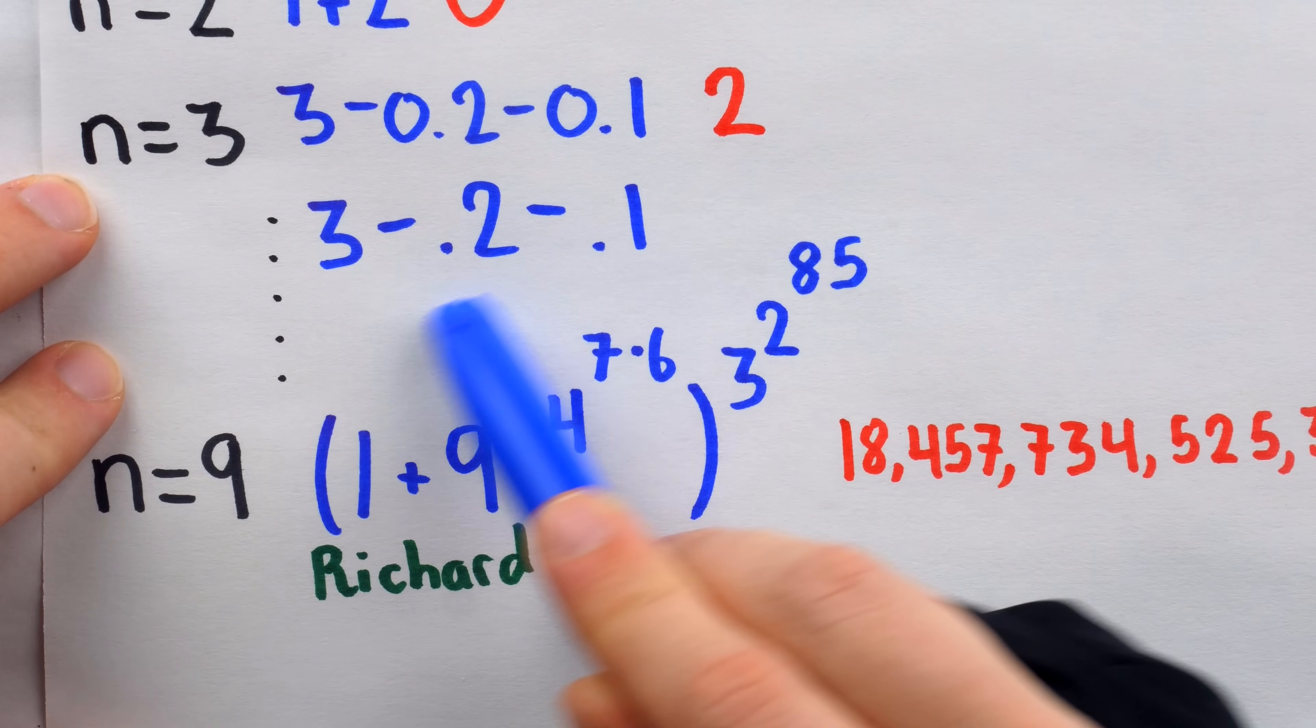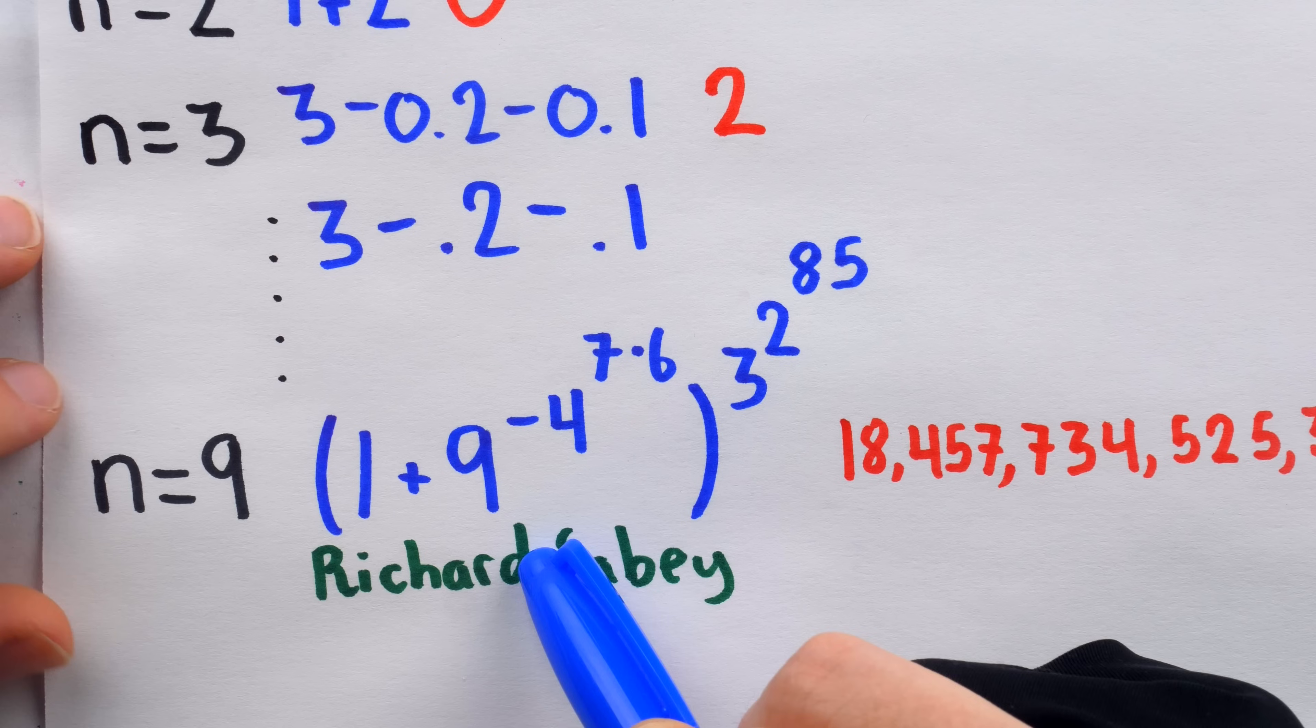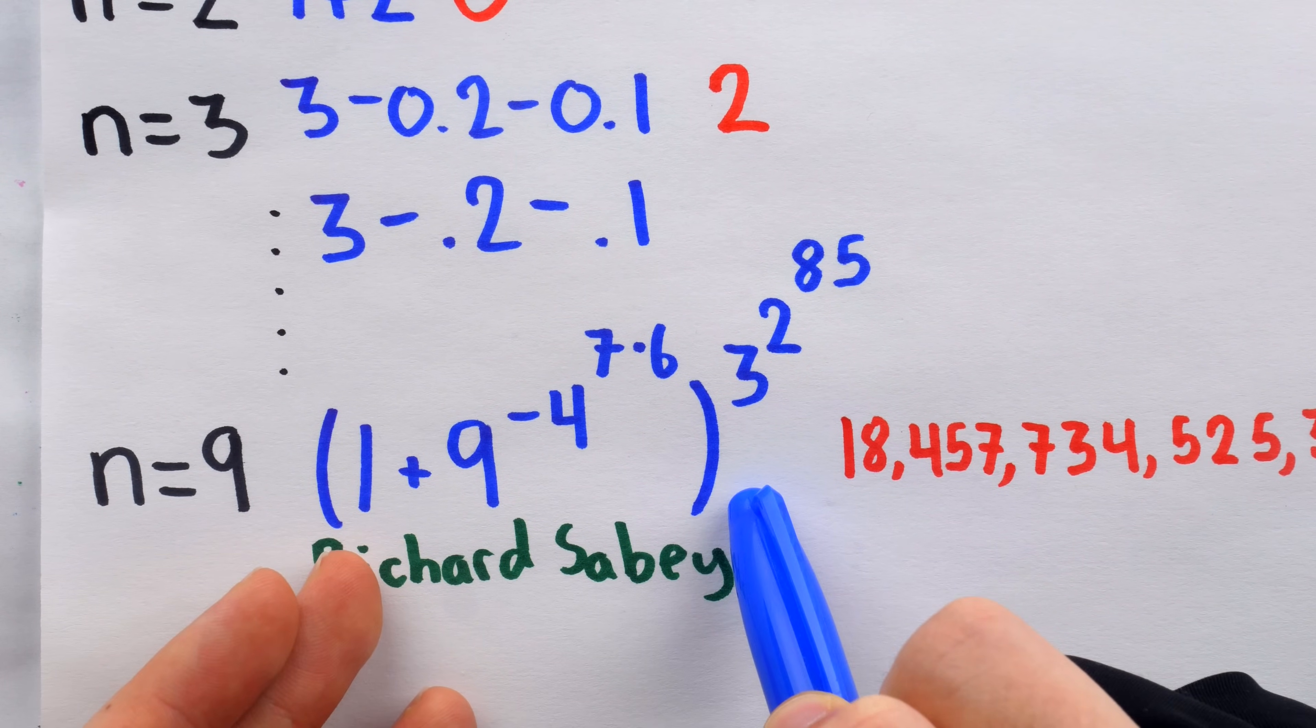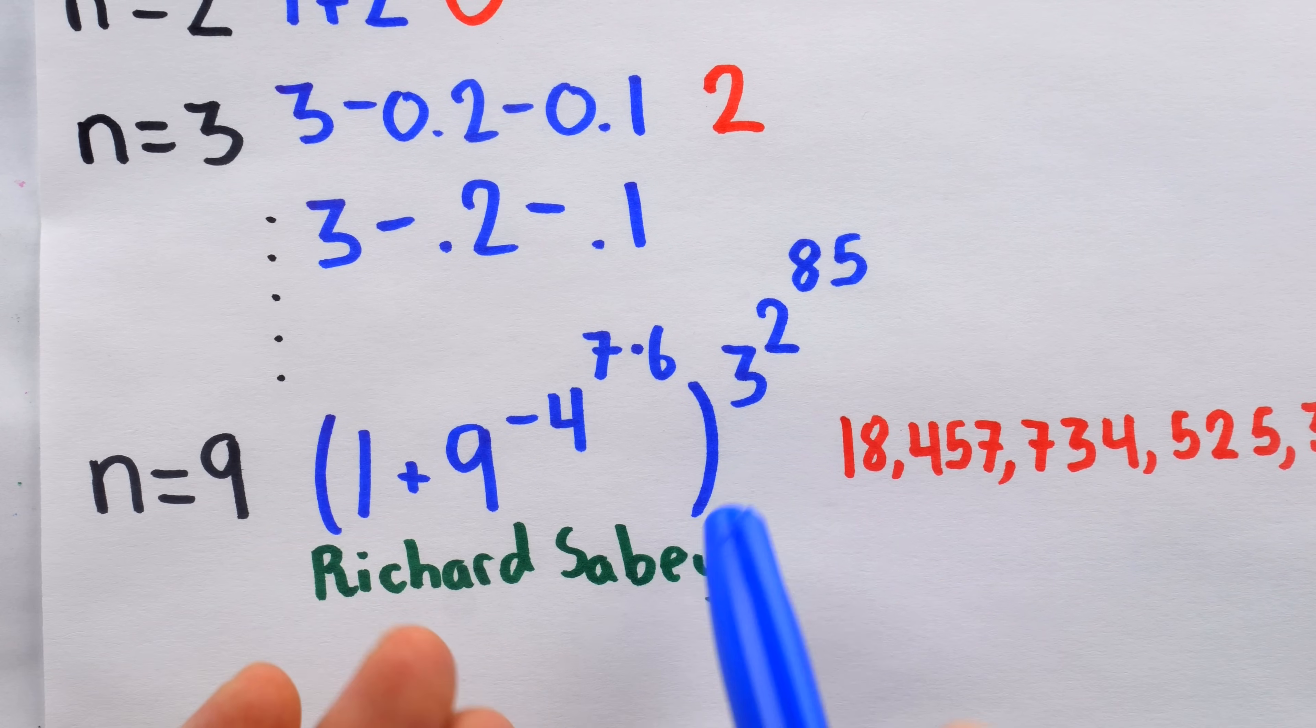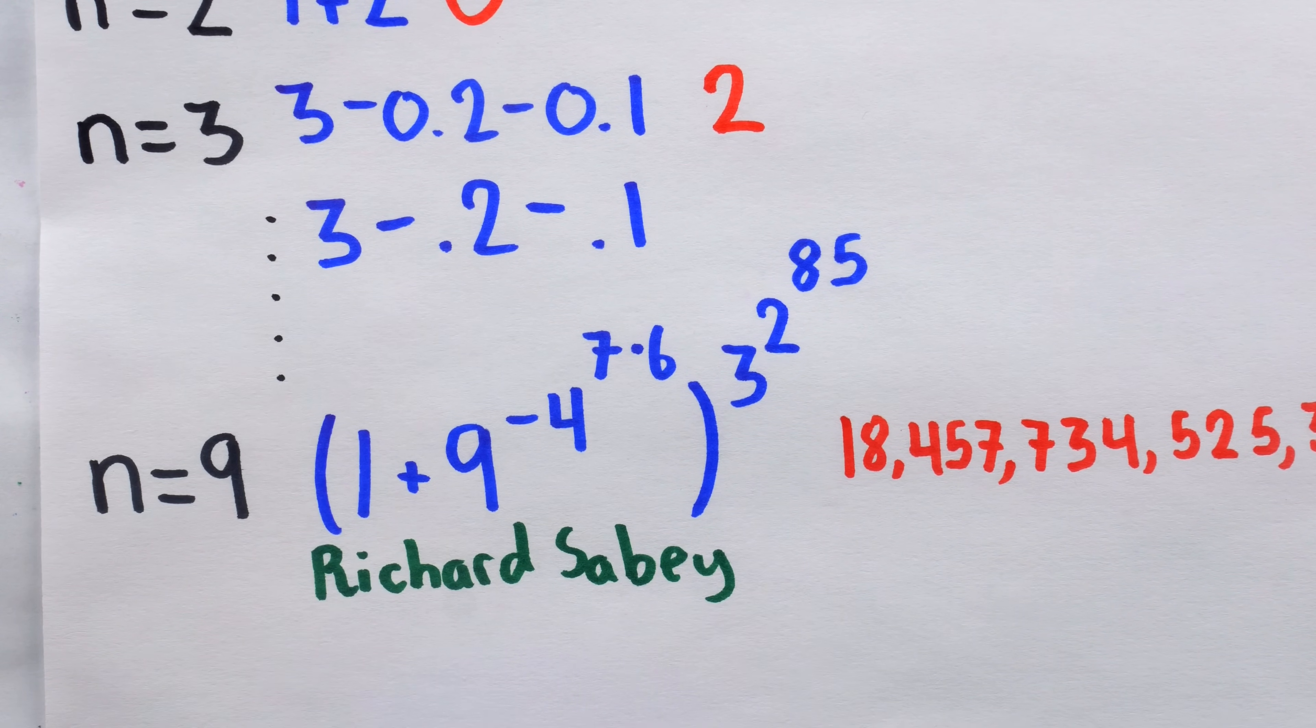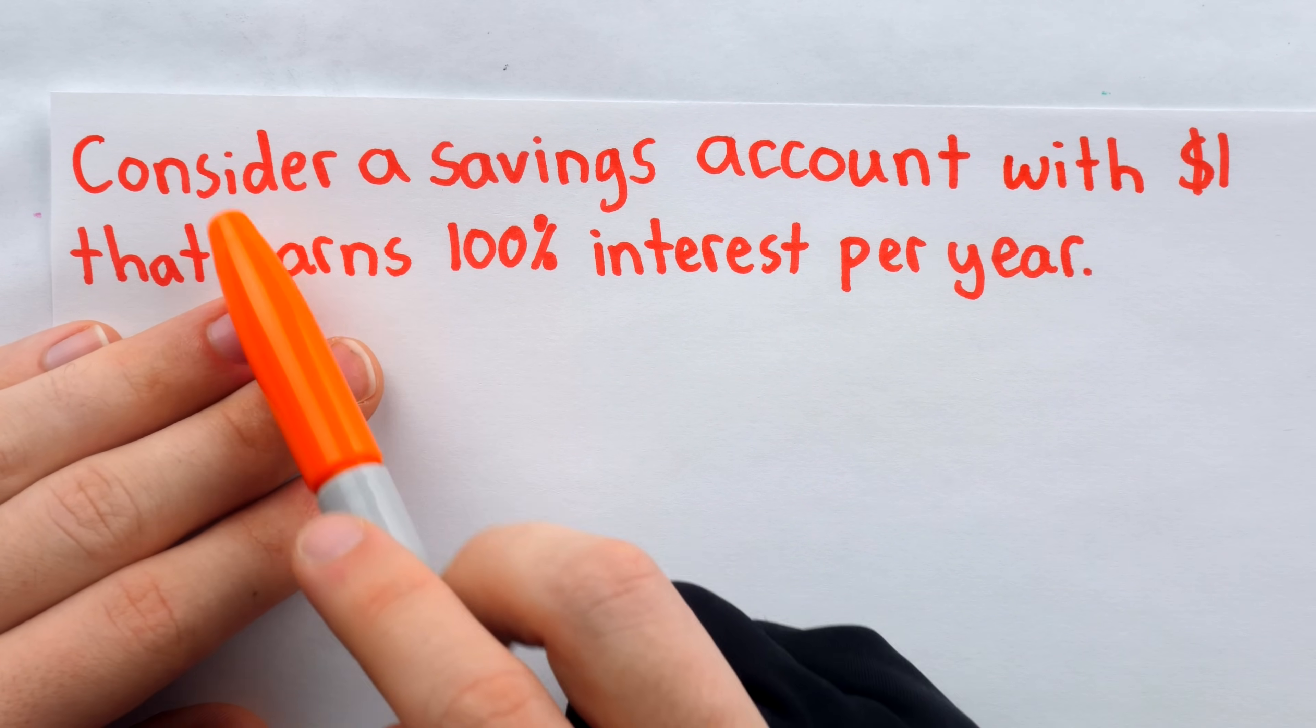Well, to understand that this is a very good approximation of e without doing the computations, you need only understand how unsurprising this approximation really is. And that all comes back to the definition of e, which stems from compound interest. So let's define e for anyone who doesn't know.